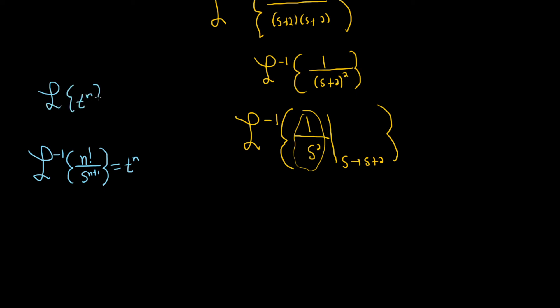Laplace of t to the n is n factorial over this. So going backwards the inverse Laplace is this one.